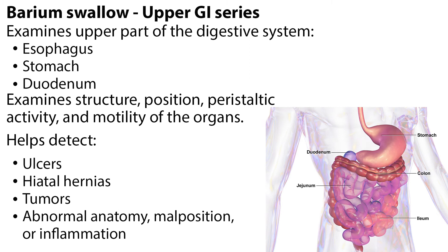There are several imaging tests that can be done to evaluate the GI system. The GI tract may be visualized by doing a barium swallow or barium enema. Barium is a radio-opaque substance that outlines the passageways of the GI tract for viewing by x-ray or fluoroscopy. The barium swallow is also called an upper GI series as it examines the upper part of the digestive system — the esophagus, stomach, and duodenum. It allows for examination of the structure, position, peristaltic activity, and motility of the organs.